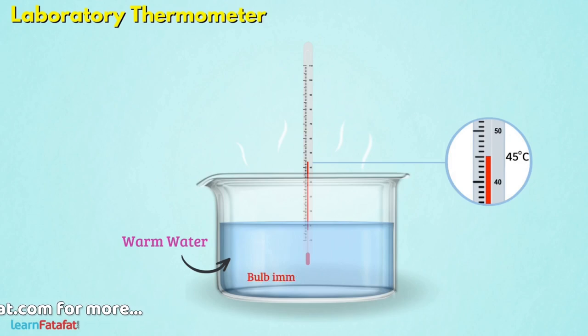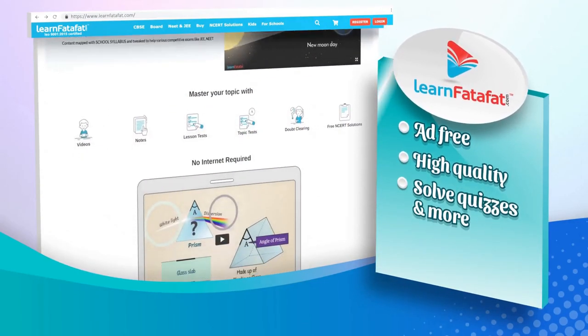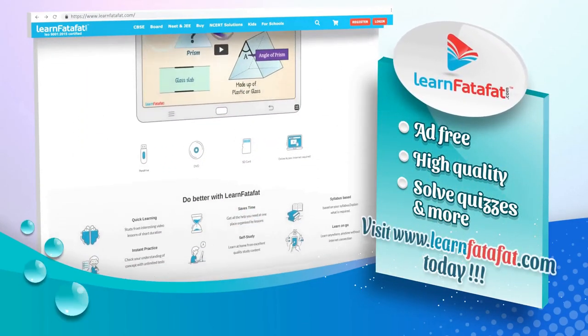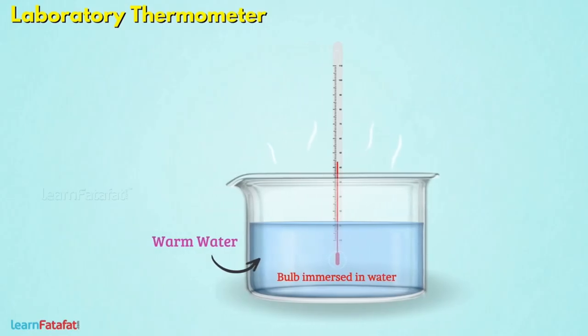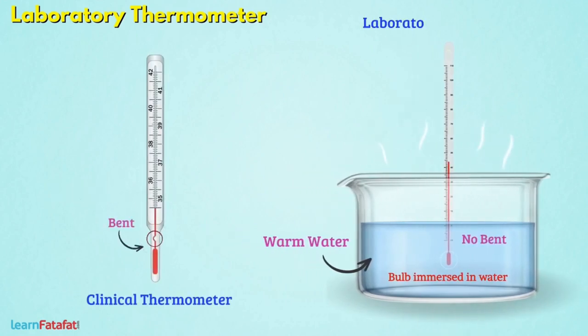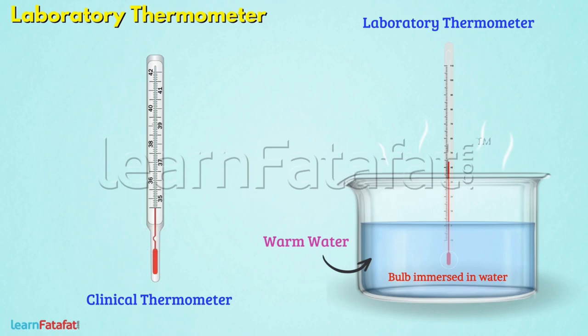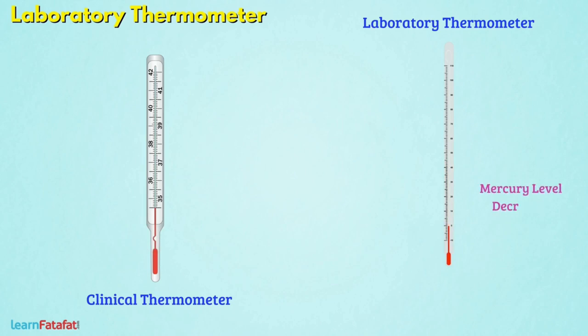We should take the reading while the bulb is immersed in water. It is because, like clinical thermometer, there is no bend in laboratory thermometer. Hence, as soon as we take the thermometer out, the mercury starts falling down rapidly. That is, the level of mercury decreases. Due to which, we did not get the correct reading.